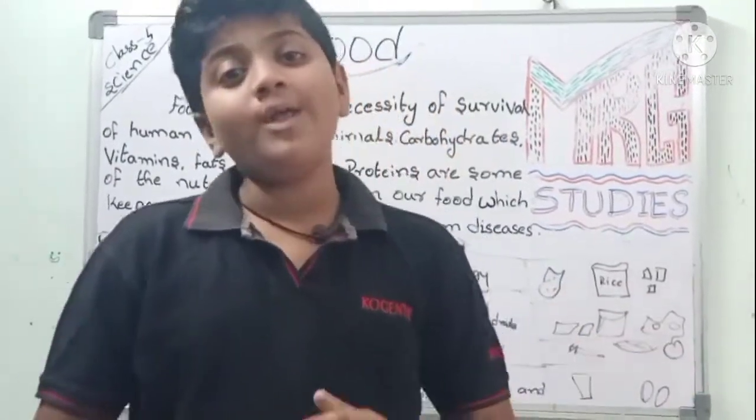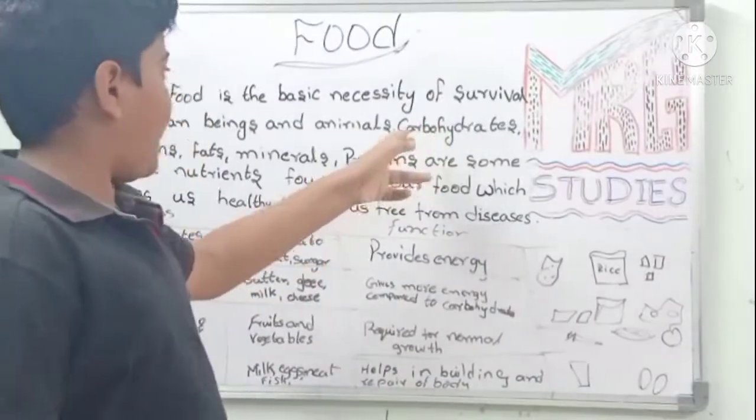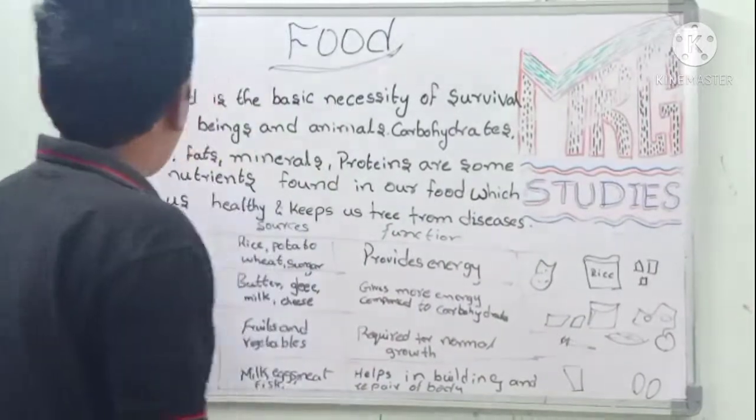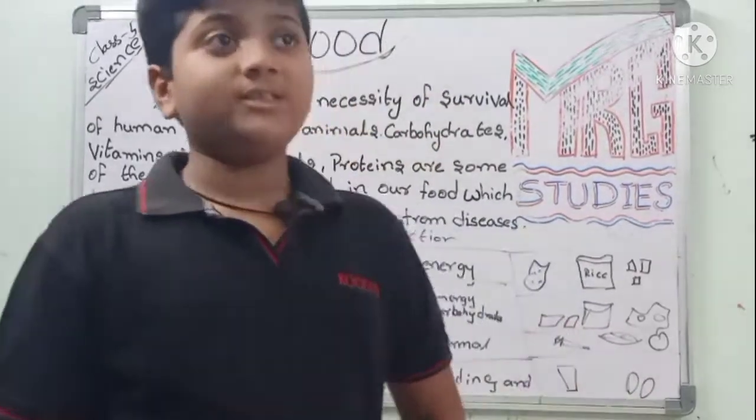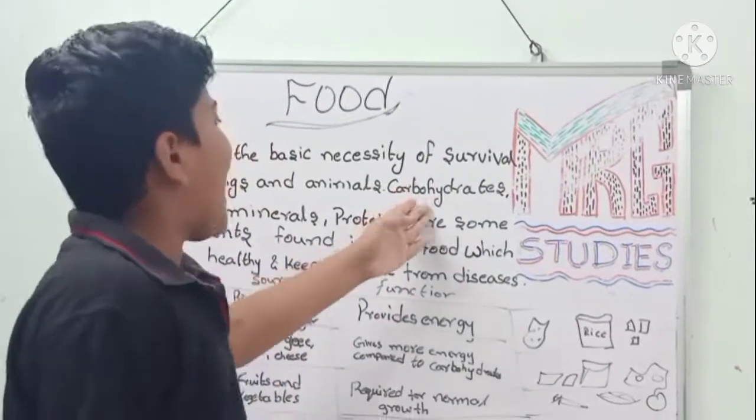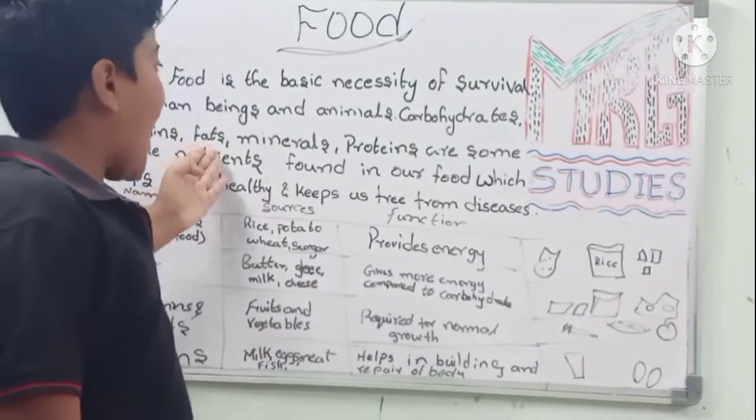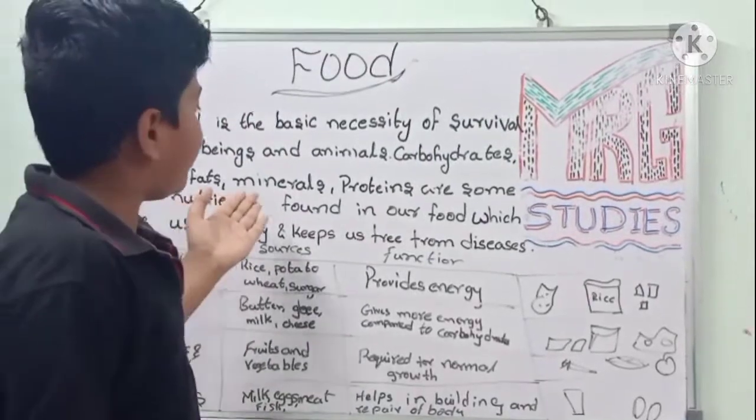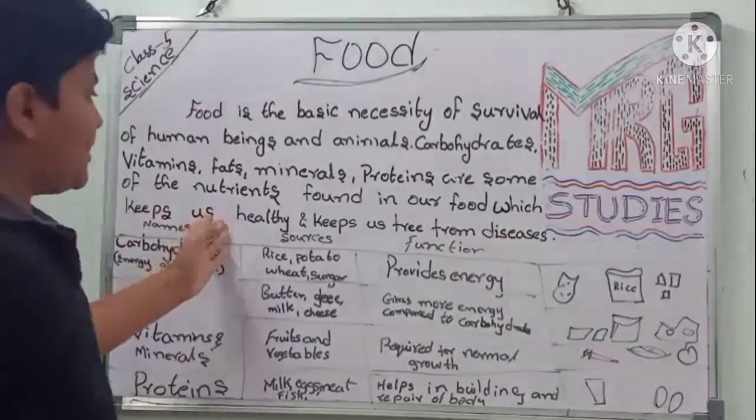Food is very healthy for humans and animals. Carbohydrates, vitamins, fats, minerals, and proteins are some of the nutrients. Animals also eat food, like meat. Carbohydrates, vitamins, fats, minerals, and proteins are some of the nutrients found in our food, which keeps us healthy.